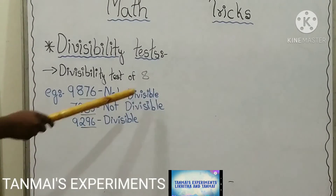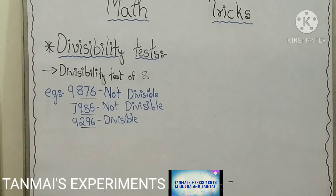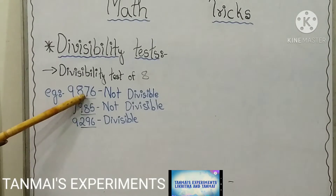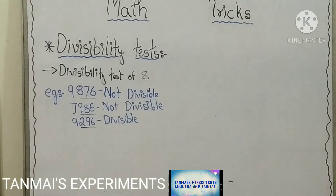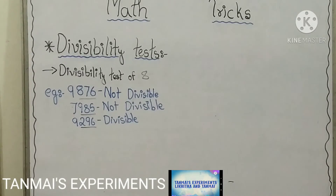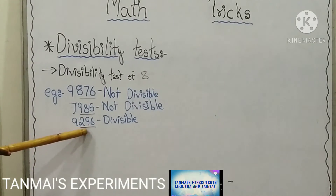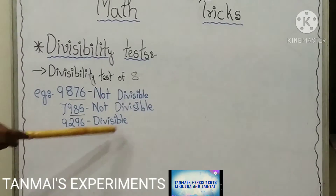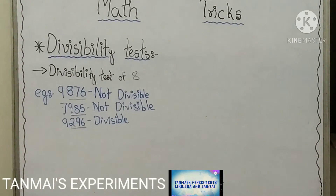The divisibility test of 8 is that in the given number, if the last three digits are divisible by 8, then the entire number is divisible by 8. In 9,876, the last three digits 876 are not divisible by 8, so 9,876 is not divisible by 8. In 7,985, the last three digits 985 are not divisible by 8, hence 7,985 is not divisible by 8. In 9,296, the last three digits 296 are divisible by 8, hence the entire number 9,296 is divisible by 8.